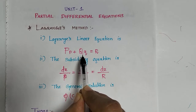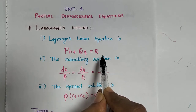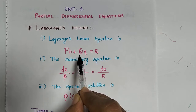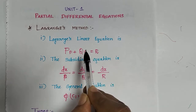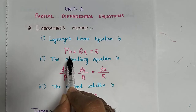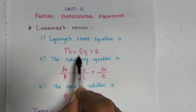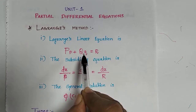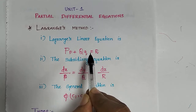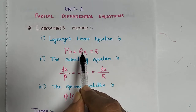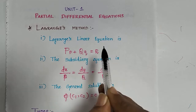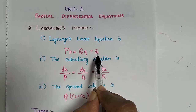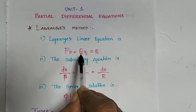Lagrange's linear equation is represented as capital P times small p plus capital Q times small q equals R. You compare this equation to your given problem. In your problem they will give small p with one term and small q with one term, and you have to compare and identify capital P, capital Q, and capital R.